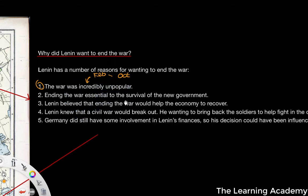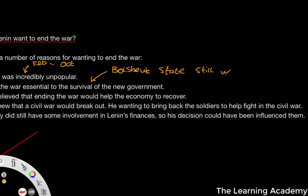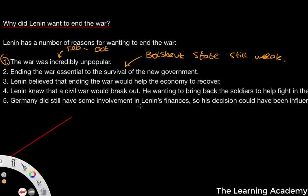Ending the war was essential for the survival of the new government. The Bolshevik state was still very weak — its strength didn't come about for a very long time. We've talked about the creation of a secret police in the last video, and this was another step towards bringing about a stronger consolidation of the Bolshevik state.